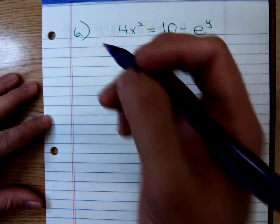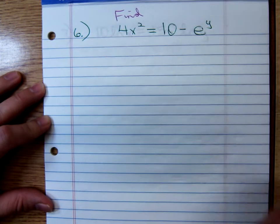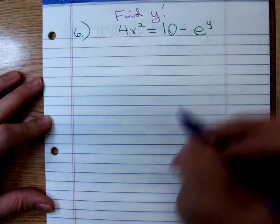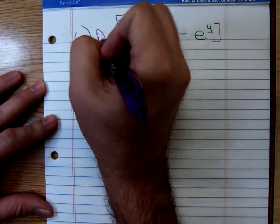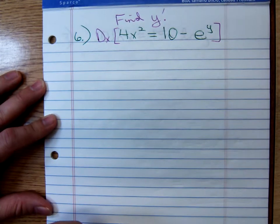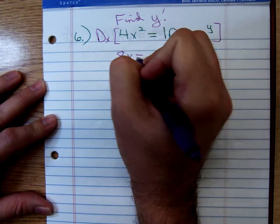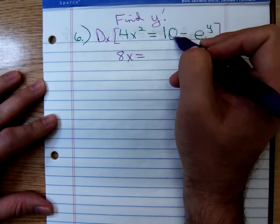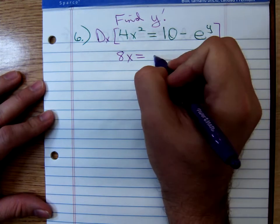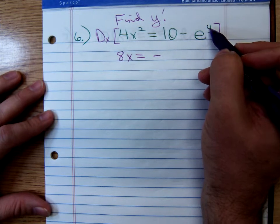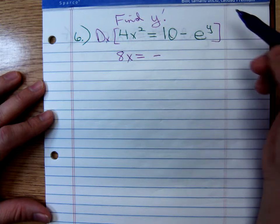So we're going to, the instructions say find, I didn't make a note of what it said. I said find dy dx. I'll just say find y prime. So we're going to differentiate in terms of x. The derivative of 4x squared, we know that that's just an 8x equals. The derivative of 10, that's a zero, so the 10 is gone, minus the derivative of e to the y power.